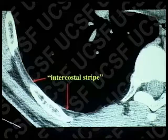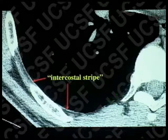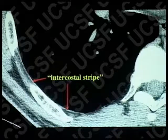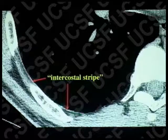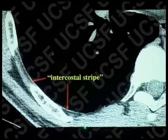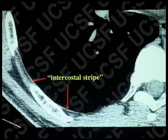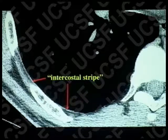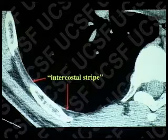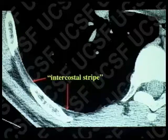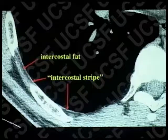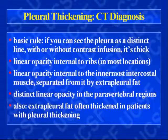The innermost intercostal muscle is anatomically absent in the paravertebral regions, so the most posterior or medial that you see that intercostal stripe is around the midpoint of the posterior thorax. You don't see it internal to that in a normal subject. There is intercostal fat outside it, nicely shown.